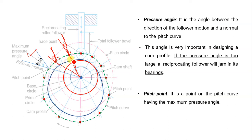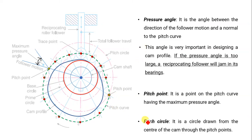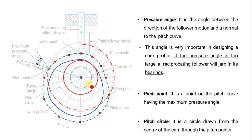The yellow-colored points shown are pitch points. The next term is pitch circle. It is a circle drawn from the center of the cam to the pitch points. The circle which passes from the center to the pitch point is called the pitch circle. This red dotted circle is actually the pitch circle.